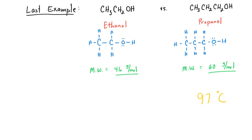So propanol is going to have a stronger London force due to its increased molecular weight versus ethanol, which will have a smaller London force. Looking up the boiling points: ethanol has a boiling point of 78 degrees Celsius, while propanol has a boiling point of 97 degrees Celsius. The only reason for this difference is the increased size of propanol — it's a bigger molecule with higher London forces. Both molecules contain an OH group and can hydrogen bond, but the difference is in size.